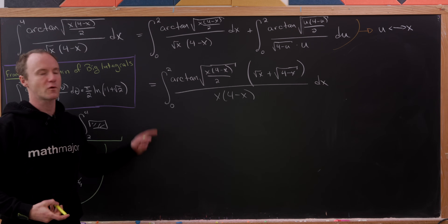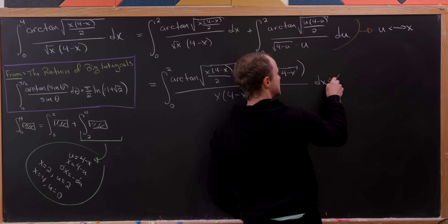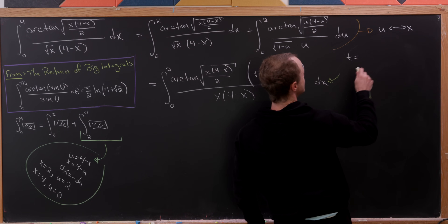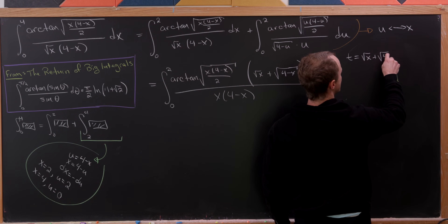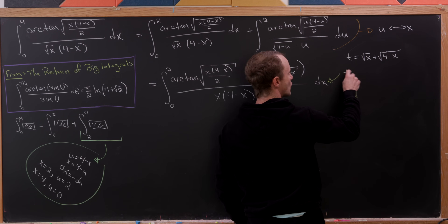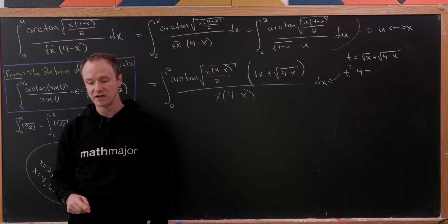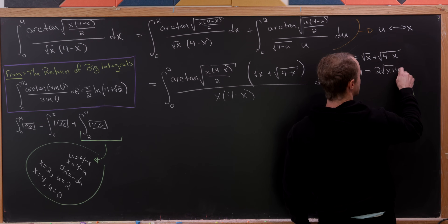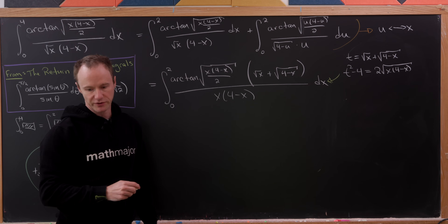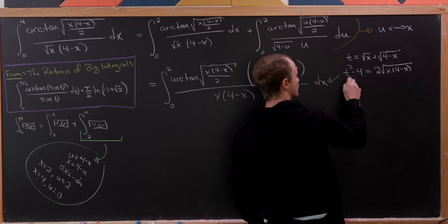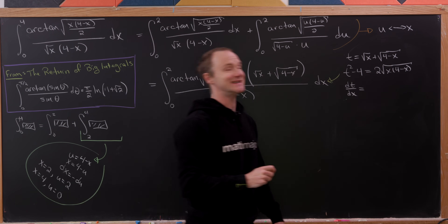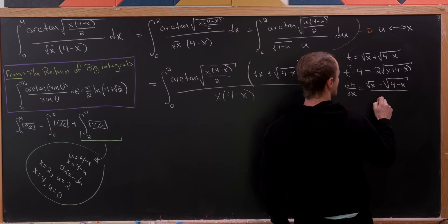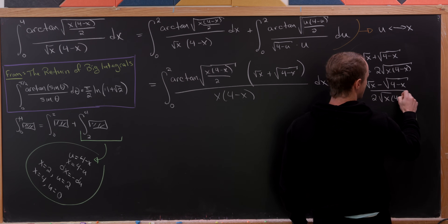Now we perform a substitution related to the numerator factor: set t equal to √x + √(4−x). Observe that squaring t and subtracting four gives t² − 4 = 2√(x(4−x)). Taking the derivative of the substitution, dt/dx equals (√x − √(4−x)) / (2√(x(4−x))).